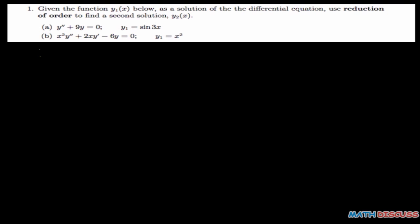Now for the second part, which is part b. We are given x squared y double prime plus 2x y prime minus 6y equals 0. And we are given a solution y1 equals x squared.